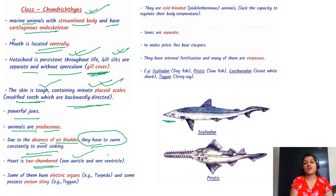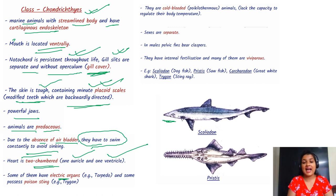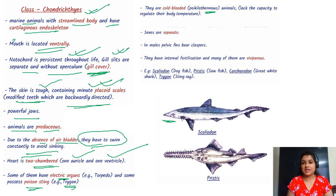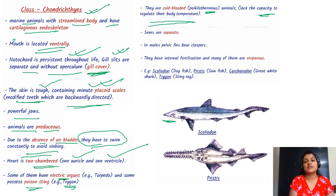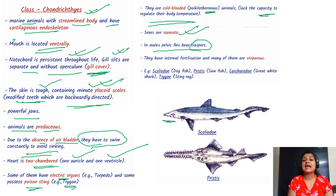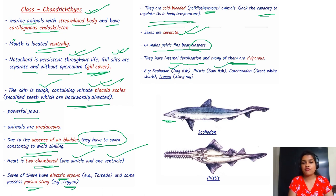The heart is two-chambered — one auricle, one ventricle. They have electric organs, and some also possess a poison sting known as the trigon. They are cold-blooded or poikilotherms, meaning they cannot maintain their body temperature. Sexes are separate; in males, pelvic fins bear claspers. They have internal fertilization and many are viviparous. Examples: Scoliodon (dogfish), sawfish, great white shark, and Trygon (stingray).